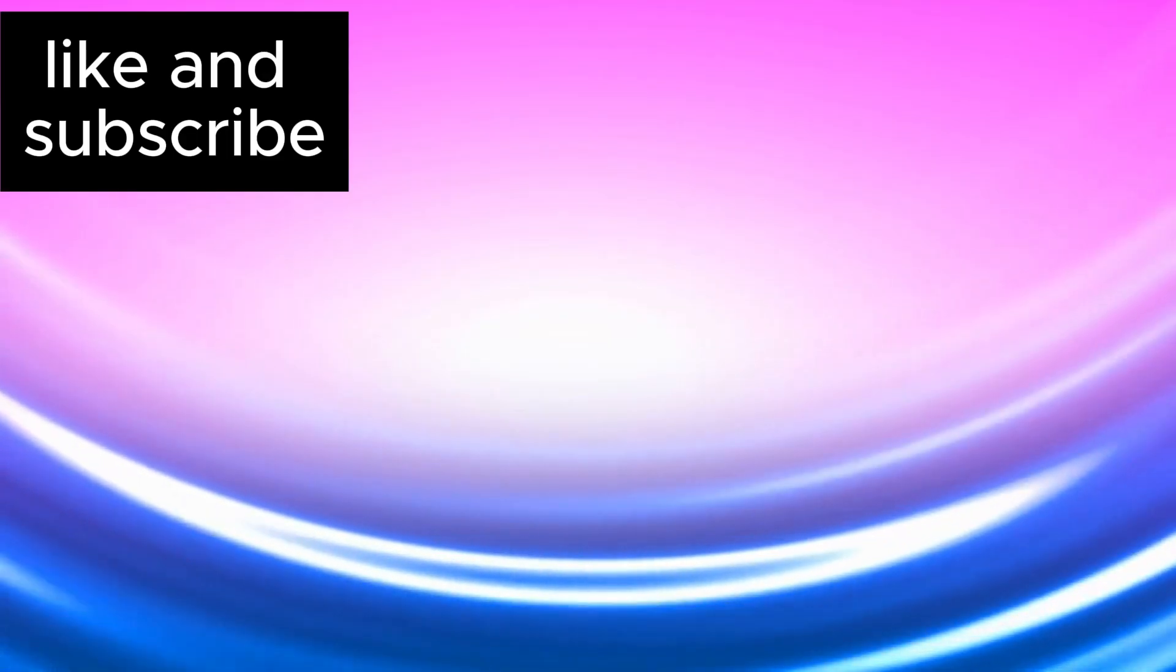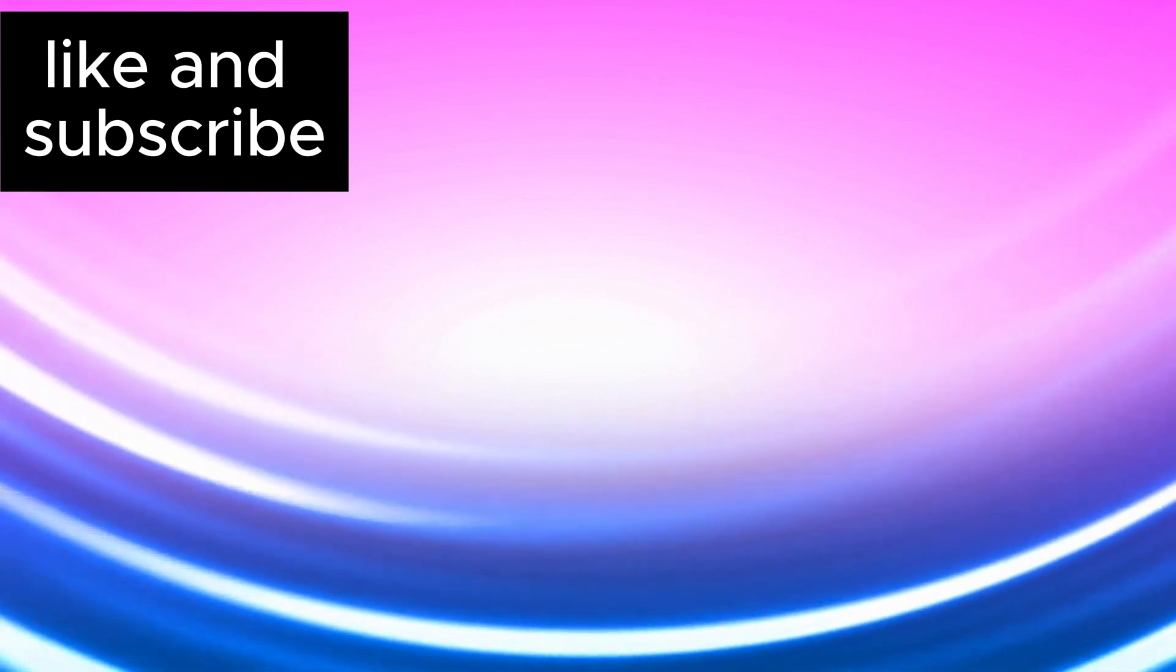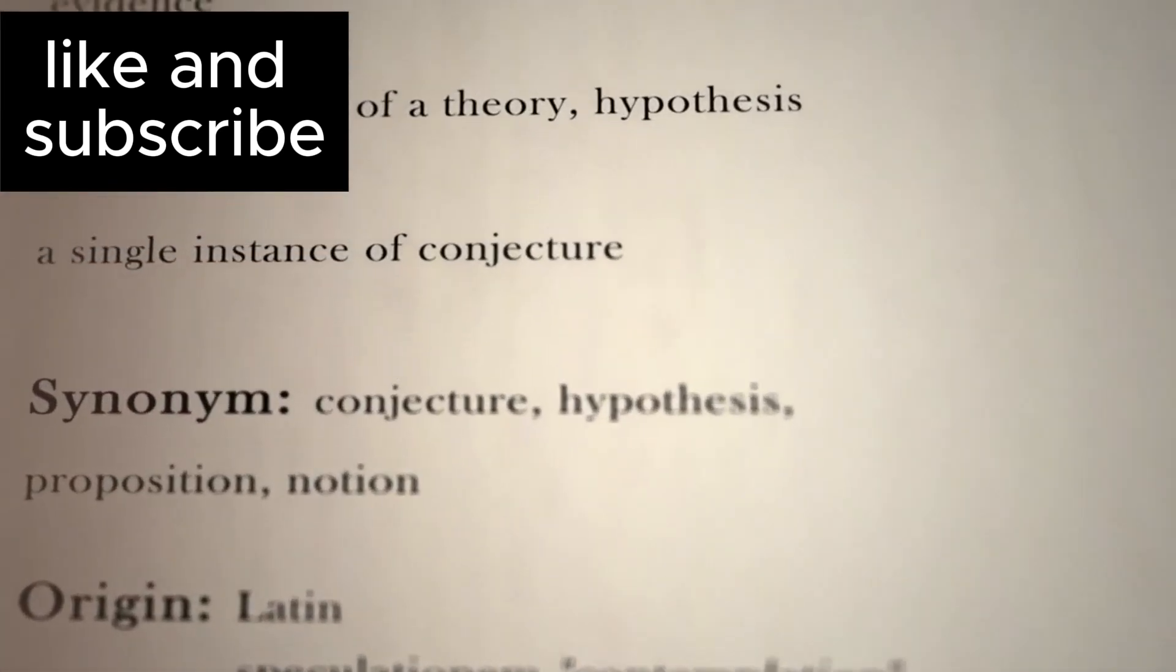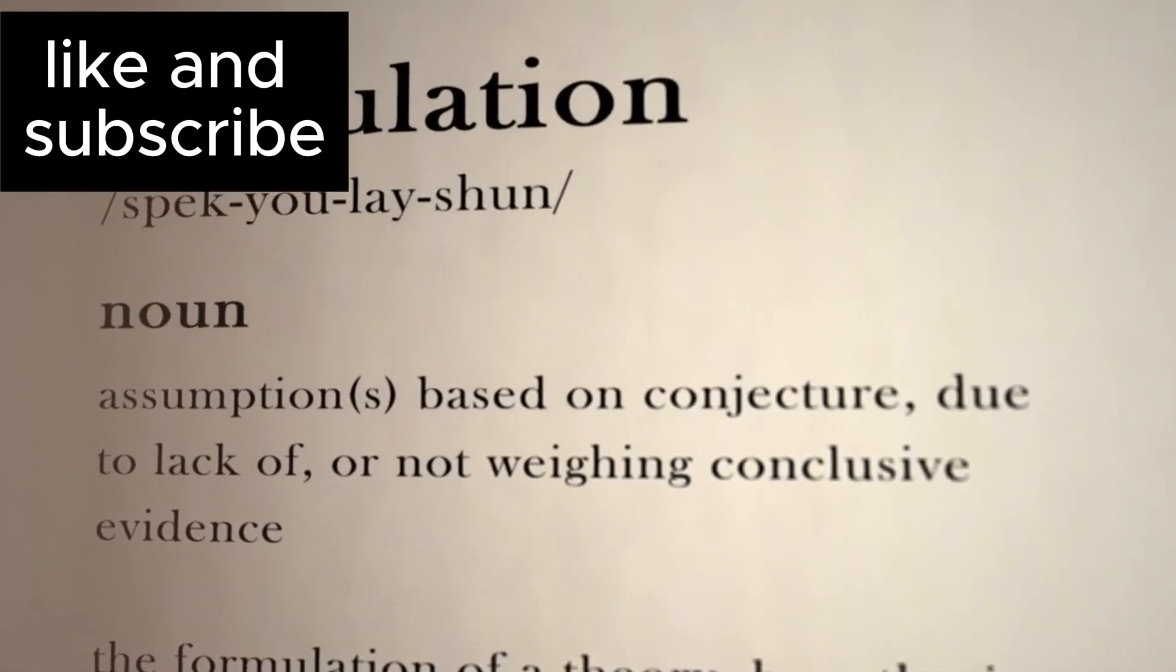One of the most mind-blowing events in Betelgeuse's recent history was something called the Great Dimming, which occurred between 2019 and 2020. For reasons we still don't fully understand, the star suddenly became much dimmer, causing a flurry of speculation.